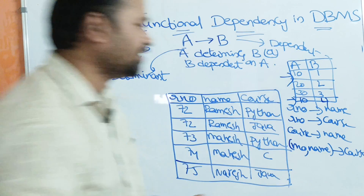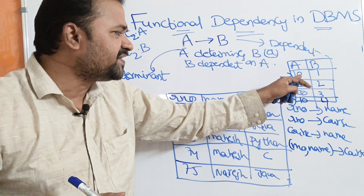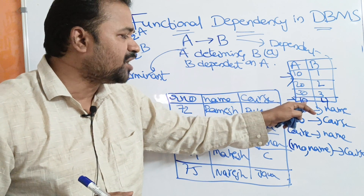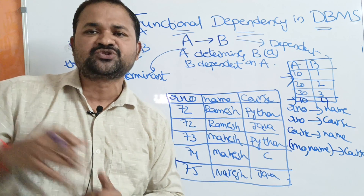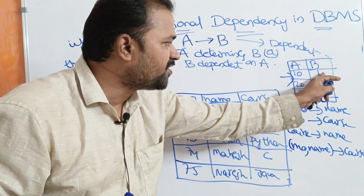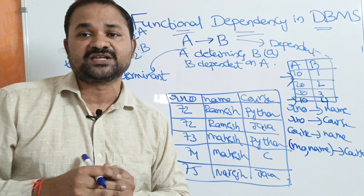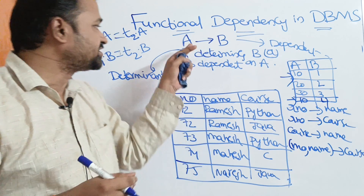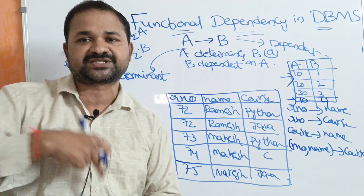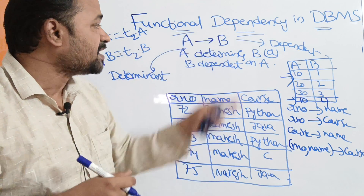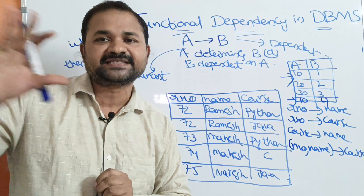Now assume that instead of 1 in the second row, we have 4. Observing these two tuples: T1.A = 10 and T2.A = 10, so 10 equals 10. Then T1.B should also equal T2.B. But T1.B is 1 and T2.B is 4 — 1 does not equal 4. That is false, so A does not determine B, and B is not functionally dependent on A.